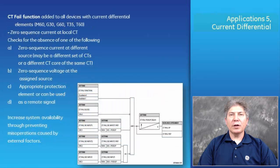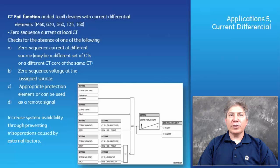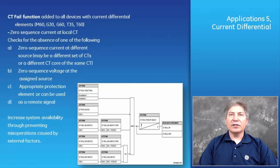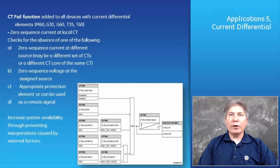Application 5: Current Differential. The CT fail function was added to all UR relays with a current differential element, such as the M60, G30, G60, T35, and T60. UR firmware version 7 provides one CT fail detection element per available current source. The CT failure element detects problems with the current transformer supplying current to the relay by detecting zero sequence current at the supervised source and checking for absence of simultaneous zero sequence current at another source, zero sequence voltage, or another protection element. This allows users to alarm and block the current differential protection when external conditions may generate a misoperation.